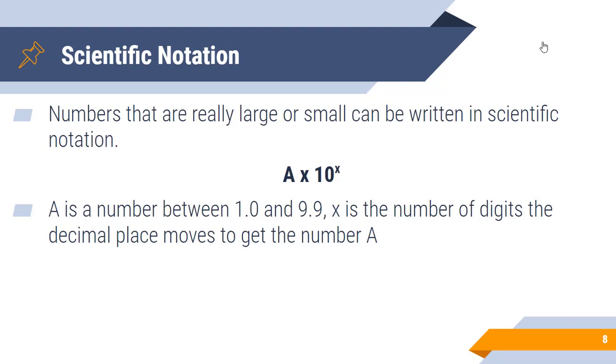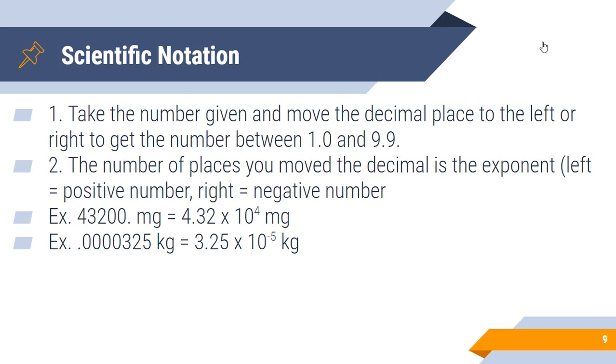Numbers that are really large or small can be written in scientific notation. The formula for this is a times 10 to the x power, where a is a number between 1.0 and 9.9, and x is the number of digits the decimal place moves to get the number a. Take the number given and move the decimal place to the left or right to get the number between 1.0 and 9.9. The number of places you move the decimal is the exponent. If you move the decimal place to the left, it is a positive number. And if you move it to the right, it is a negative number. For example, 43,200 milligrams becomes 4.32 times 10 to the fourth milligrams. 0.0000325 kilograms becomes 3.25 times 10 to the negative fifth. We move that decimal place to the right five spots, so the exponent is to the negative fifth.